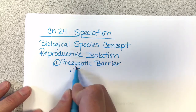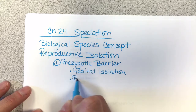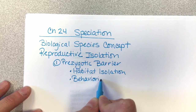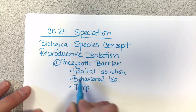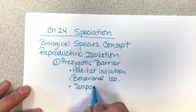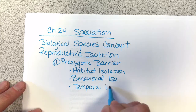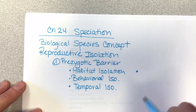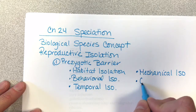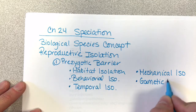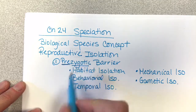Prezygotic barriers include habitat isolation, behavioral isolation, and temporal isolation — meaning timing, like flowers flowering at different times of the day or mating at different seasons. There's also mechanical isolation and gametic isolation. These are all prezygotic barriers, which means they happen before the zygote is formed.